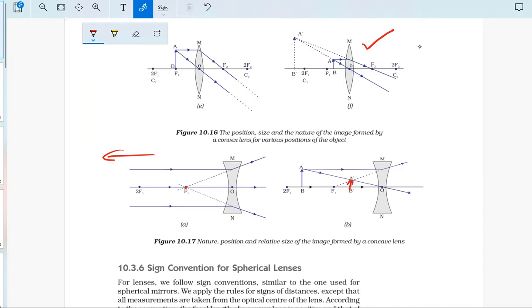The image will be diminished point size, and in both the cases, it won't be obtained on a screen. It will be seen inside the lens only.